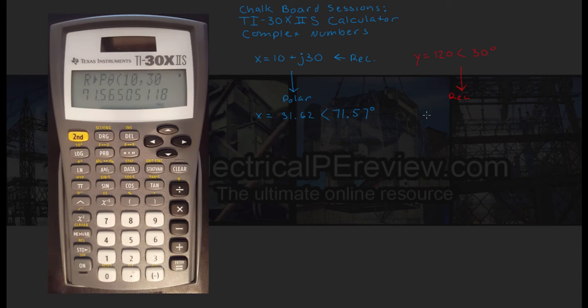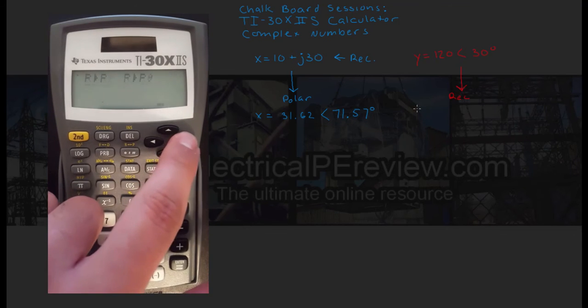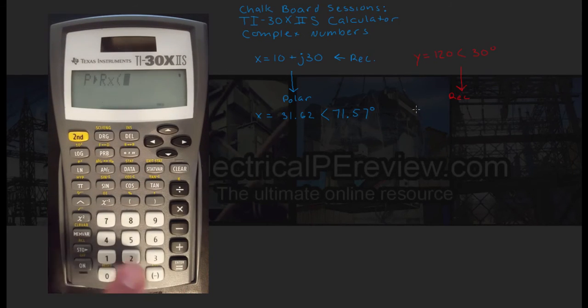So we're going to go to second real to polar. This time tab all the way over to p to rx, given polar, find the real component of x, type 120 for our magnitude, comma, 30 for our angle, enter. This gives us 103.92.